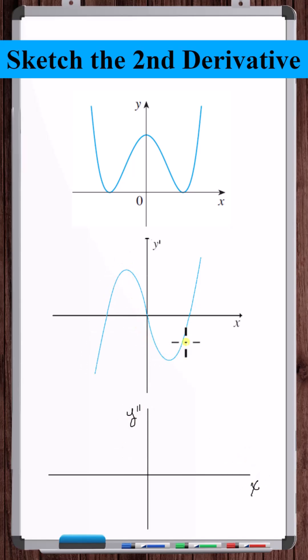Let's take a look at the first derivative graph. The slope starts out positive until this point, then it turns negative. So the second derivative will cross the x-axis here.